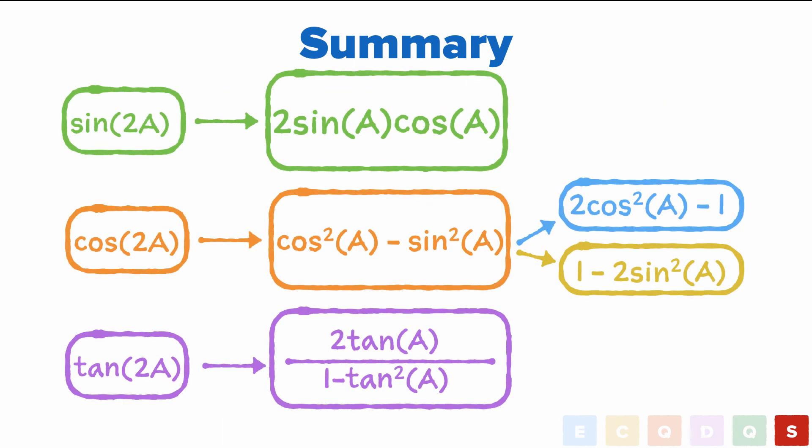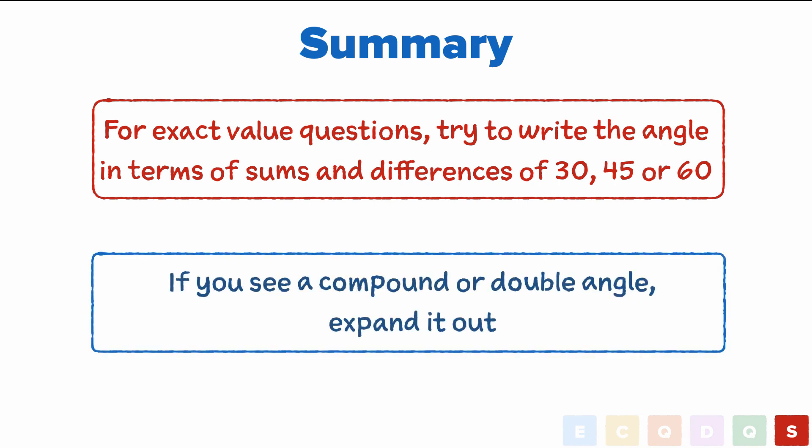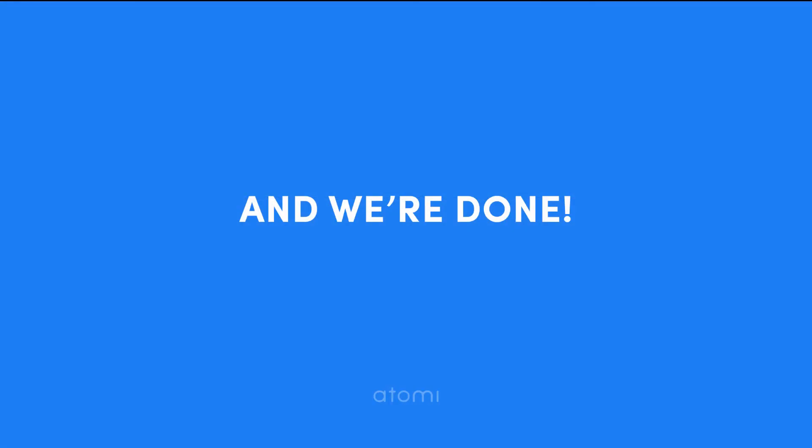Also here are a few other tips for answering questions. If you're doing questions where you're trying to find an exact value of a weird looking angle, we want to try and write that angle using sums and differences of 30, 45 and 60, because we definitely know their exact values. And secondly, if you see a compound angle or a double angle, it's generally a good idea to expand that out and ride the magical journey that it takes you on. So that's it for this video guys, catch you next time.